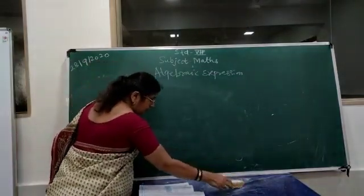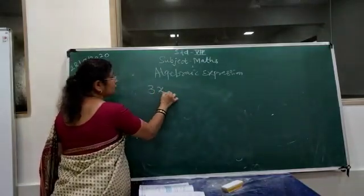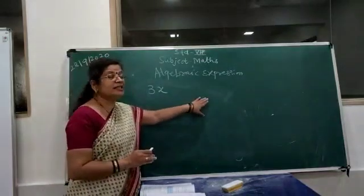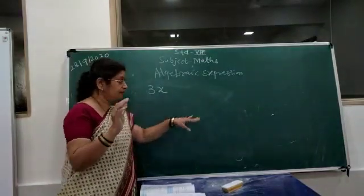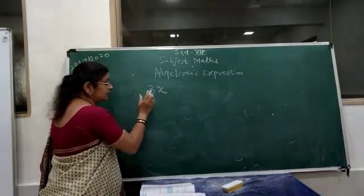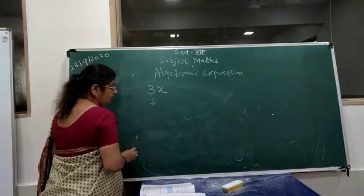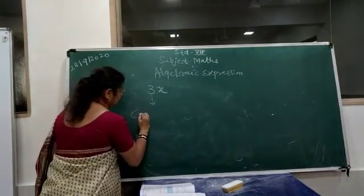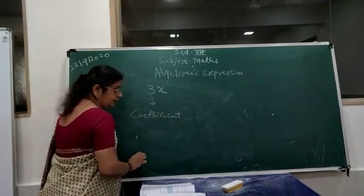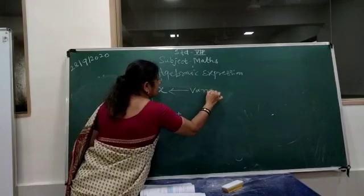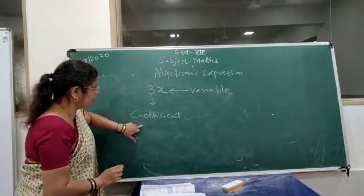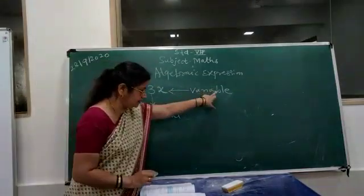Now we will learn in detail. In the expression 3X, this is very important because these expressions will continue into higher classes. In the term 3X, the number 3 is called the coefficient, and X is the variable.